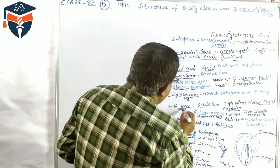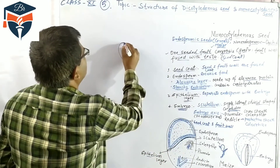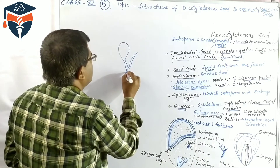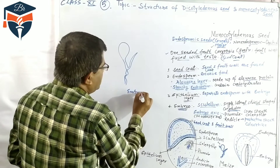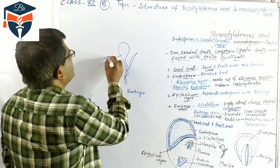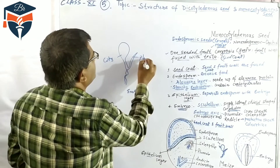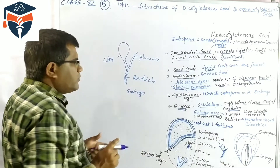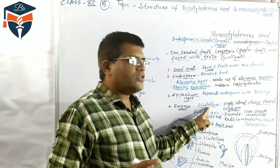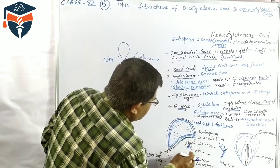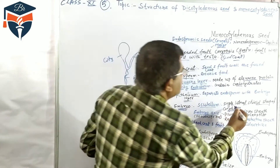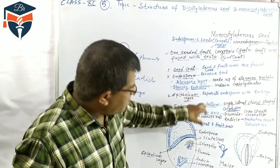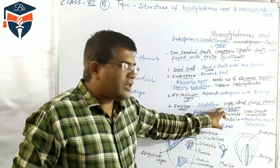In the monocotyledonous embryo, there is one plumule and one radicle. The embryo has a single cotyledon called the scutellum. The scutellum is a single lateral shield-shaped structure. So the cotyledon in monocotyledonous seed is known as the scutellum.